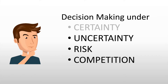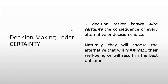Let's start with decision making under certainty. Decision making under certainty is where a decision maker knows with certainty the consequences of every alternative or decision choice. Naturally, they will choose the alternative that will maximize their well-being or will result in the best outcome. Although, in real life, it is kind of impossible for a decision maker to know with certainty the different consequences for a particular course of action, so it is very uncommon.